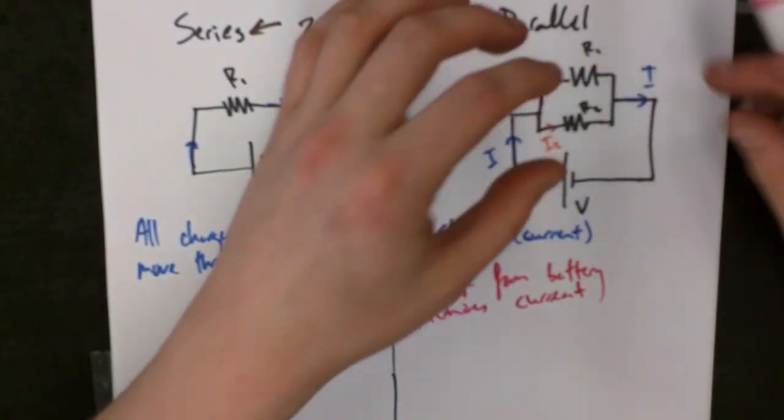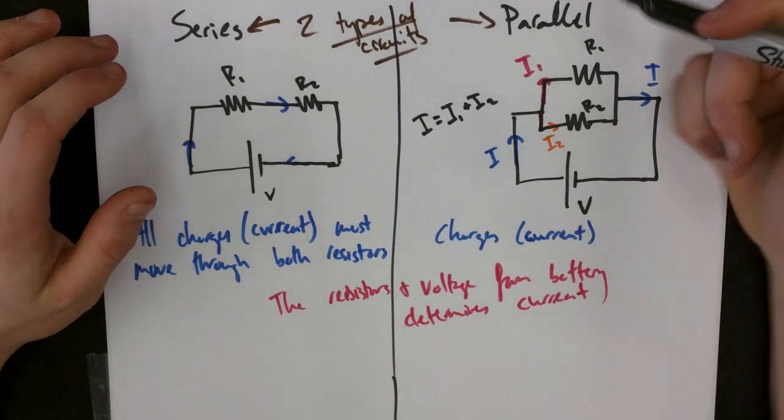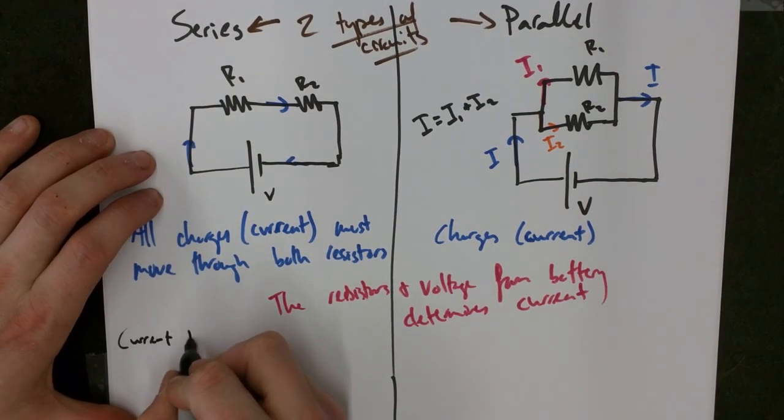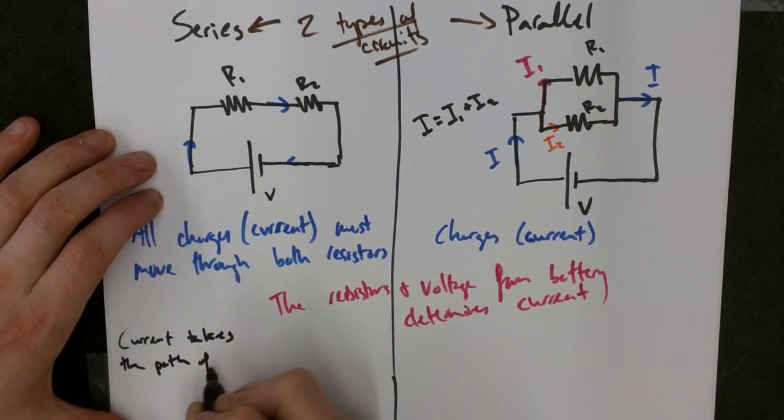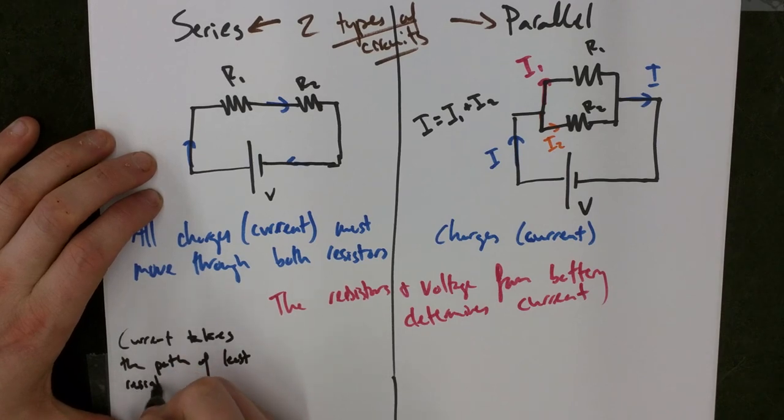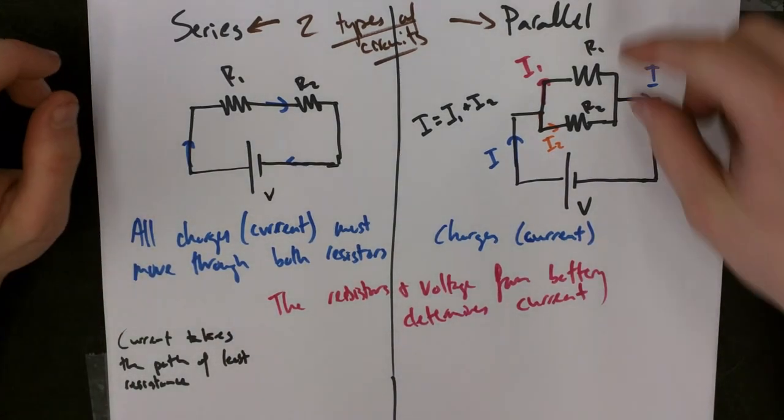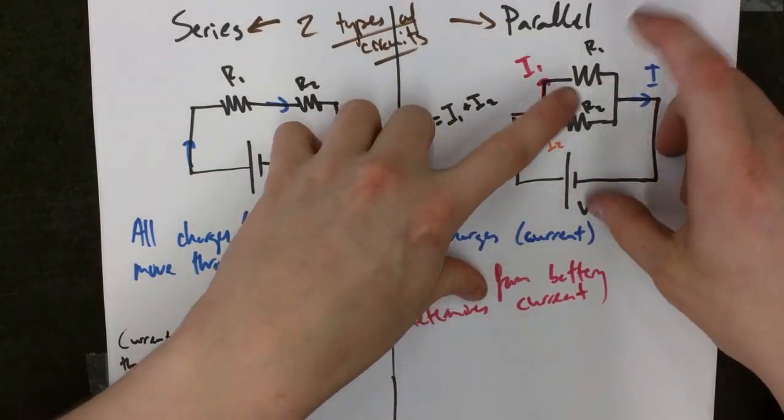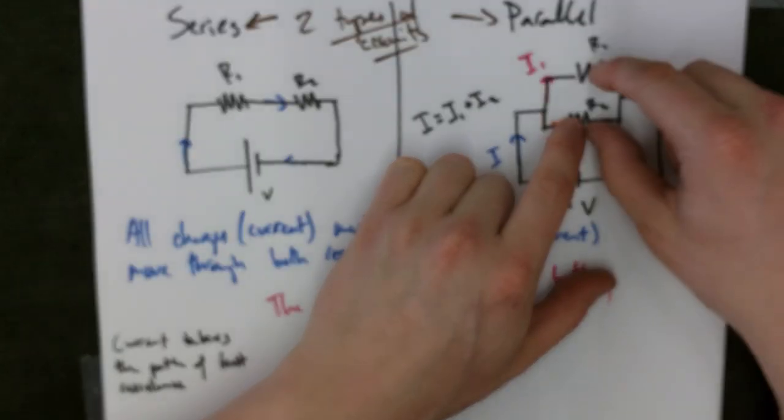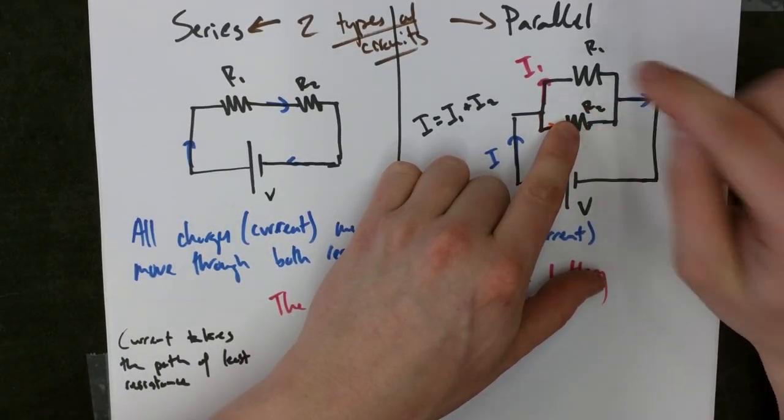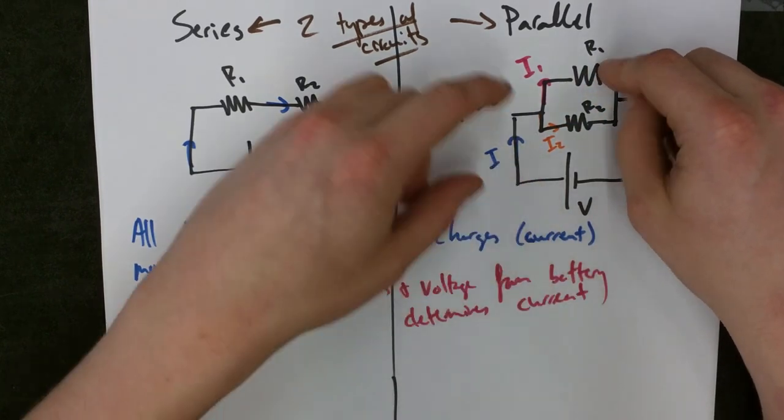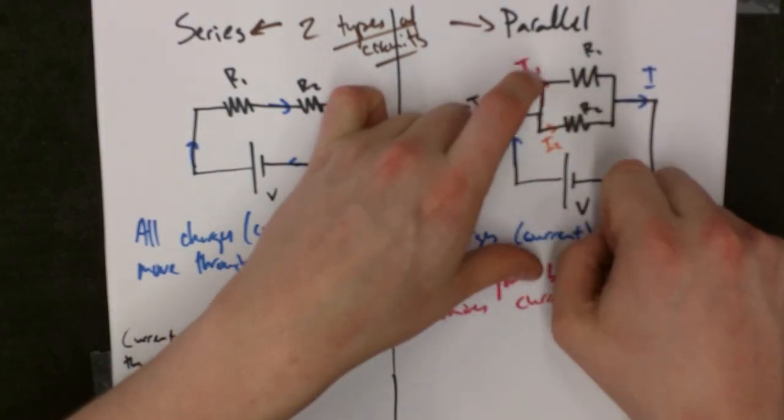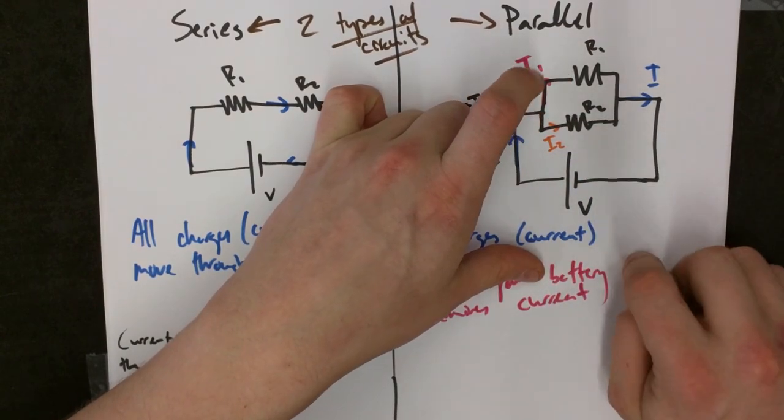Whereas over here, well, one thing to note about our current is that it takes the path of least resistance. So, most of the current here will go to the resistor that has the smallest resistance, maybe that's R2. So if both of these were light bulbs, with this one being lower resistance and that one being higher resistance, then this light bulb would light up more than that light bulb, which would still light up a little bit, but most of the current is going through this R2.